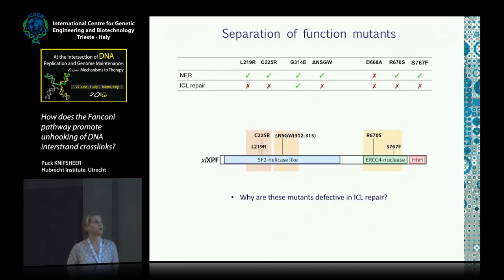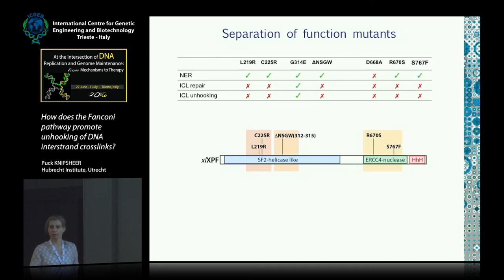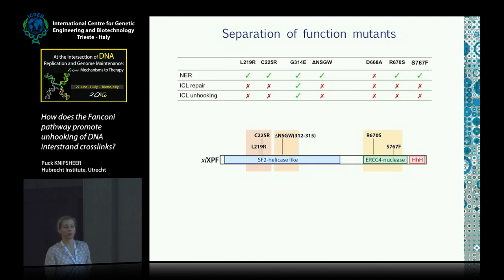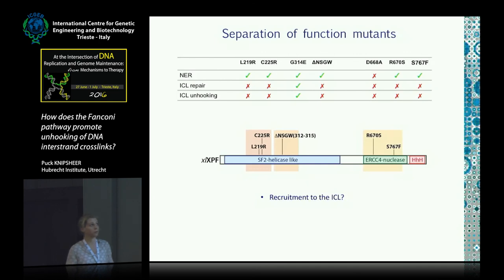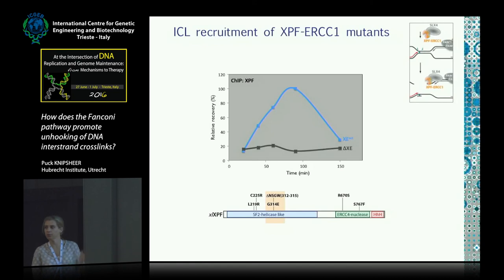We now have proven five separation-of-function mutants spread over the entire sequence of XPF across several domains. We wondered why these mutants are defective in ICL repair. First, we checked whether their defect is caused by a defect in ICL unhooking, and indeed all the defective mutants showed a defect in ICL unhooking — the step we know XPF ERCC1 is involved in. We then wondered whether these proteins were recruited to the ICL, as that could be one reason for failure. Using our ChIP assay, we can show that wild-type protein is recruited to the ICL at the time of incisions, but removing XPF gives no recruitment.